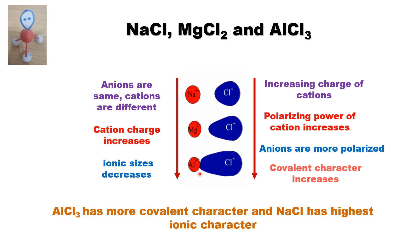That is why aluminium chloride has the highest covalent character, but NaCl has the least covalent character, meaning it has more ionic character.